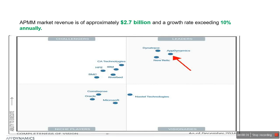As per Gartner, the APMM market is approximately 2.7 billion USD and is expected to grow at the rate of 10% annually. AppDynamics is placed in the leader quadrant for APMM products in 2016 and has been in this position for the last 5 years. It is also one of the fastest growing APMM products in the market by market share.